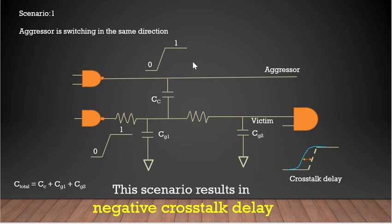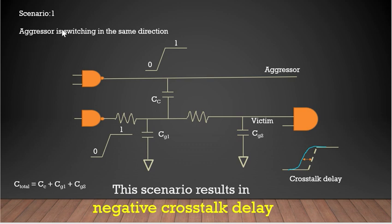Let's say the aggressor is a river and the victim is a boat. If the aggressor is going in the same direction as the victim — if the boat is flowing in the same direction as the river — then it will go faster. So similarly, when the aggressor and victim are switching in the same direction, the delay will be less. If the switching was happening at t seconds, it will now happen at t minus something seconds — before time. So we can say when aggressor and victim switch in the same direction, it induces a negative crosstalk delay.